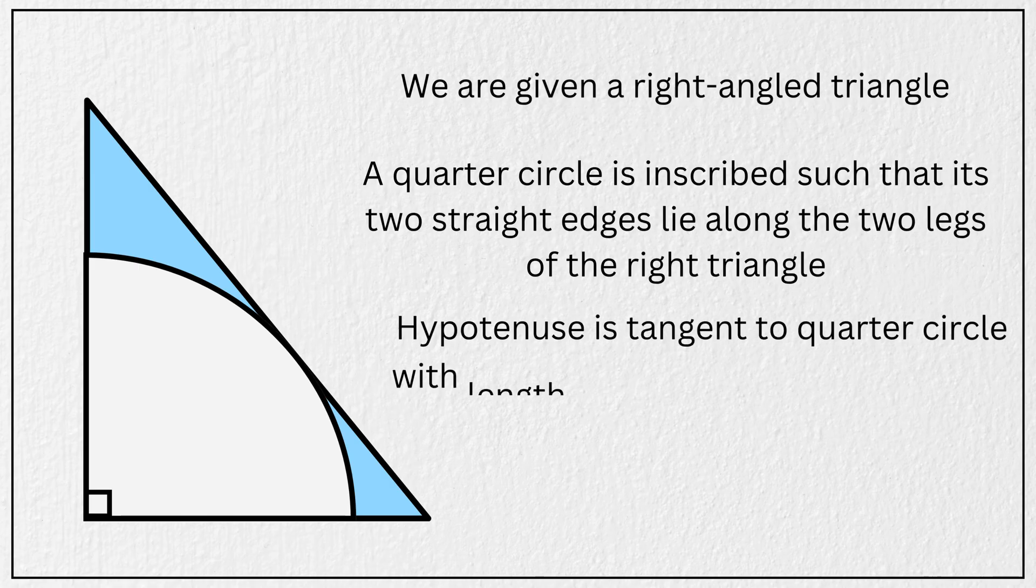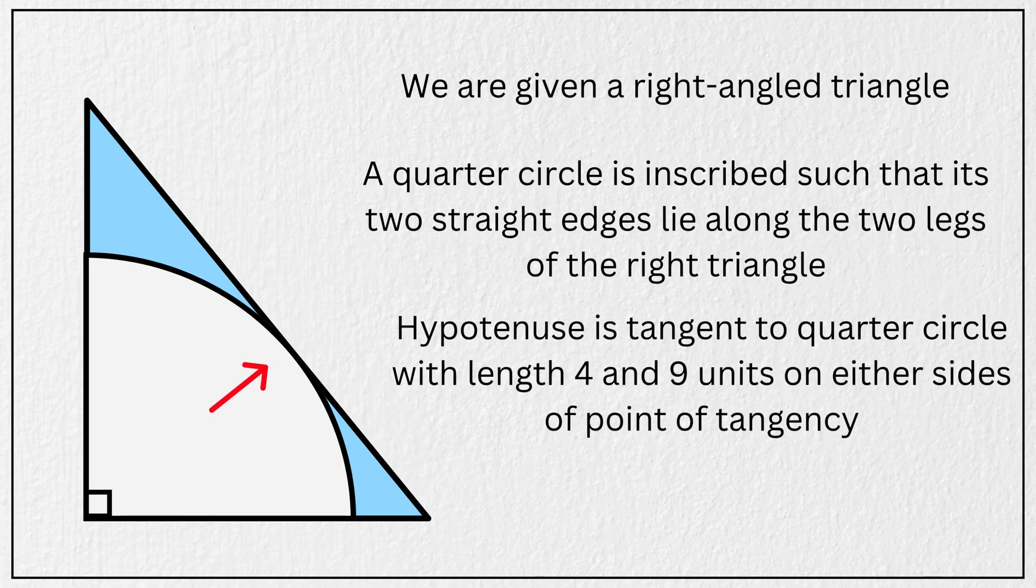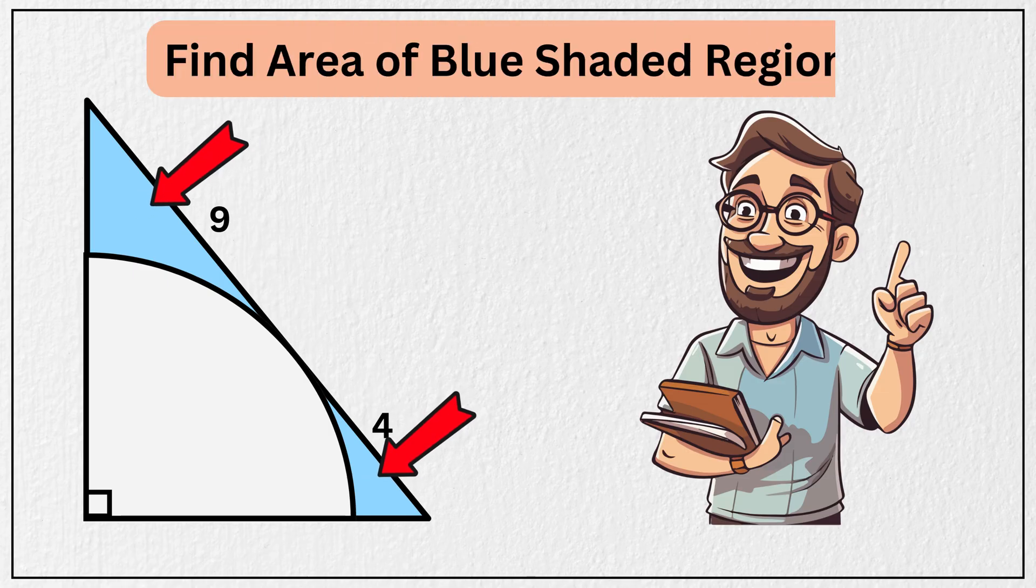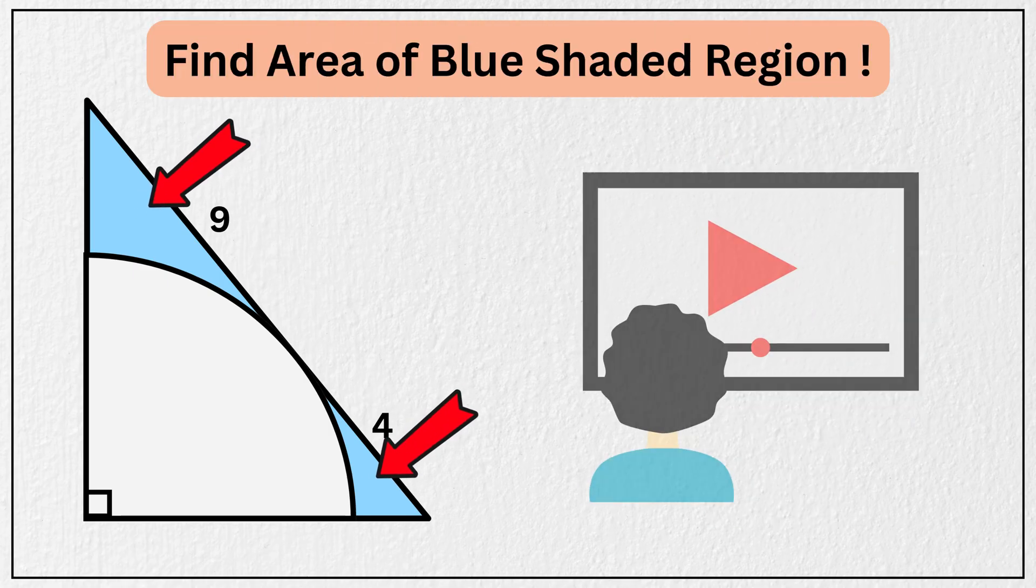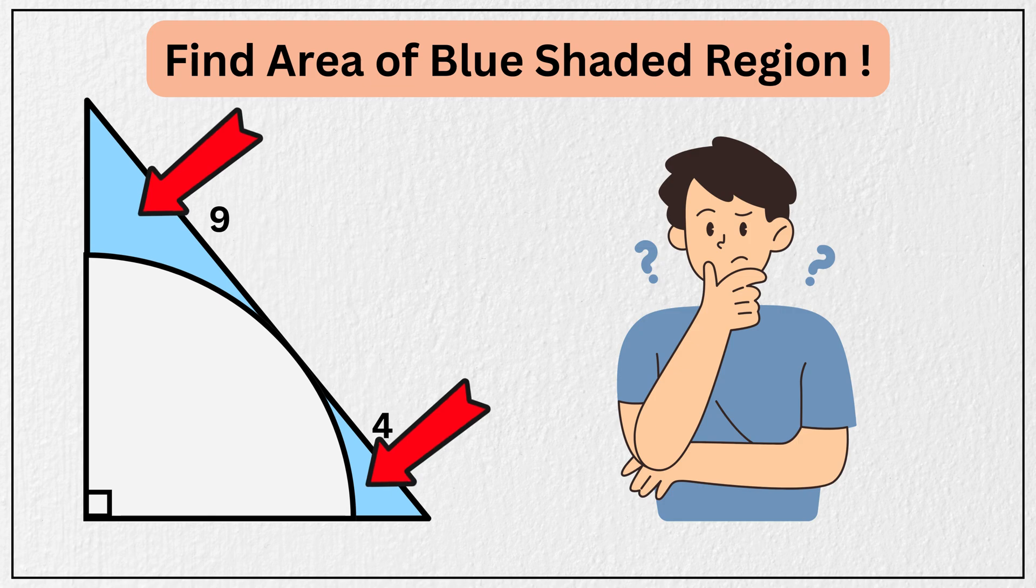And the hypotenuse of the triangle is tangent to the arc of the quarter circle, such that one segment of the hypotenuse measures four units from the point of tangency, and the other segment measures nine units from that same point. And the question is to find the area of this blue-shaded region. You can pause the video and take a moment to think about it.